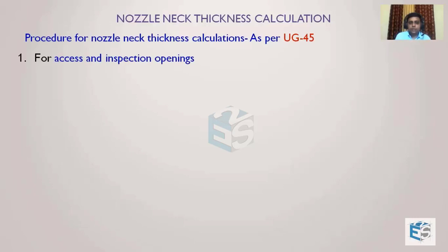The procedure for access and inspection openings is different. There is a differentiation between process nozzles and access openings, because access openings are not connected with any process nozzles — they always have blind connections. So they will not face any pressure or temperature variations that other process nozzles face, and loads from attached piping are also not present.